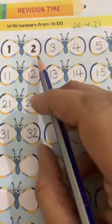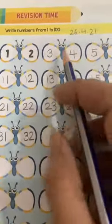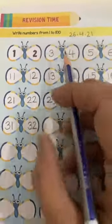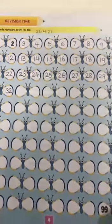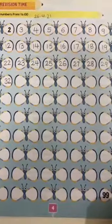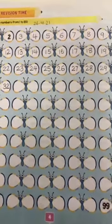Here butterflies are drawn and on the wings of butterfly, you have to write the forward counting from 1 to 100. So, write it neatly.